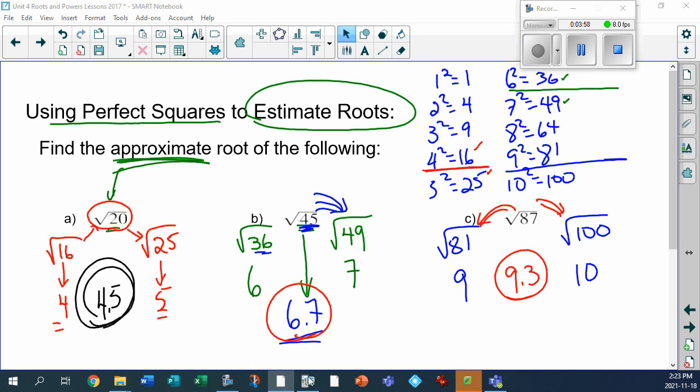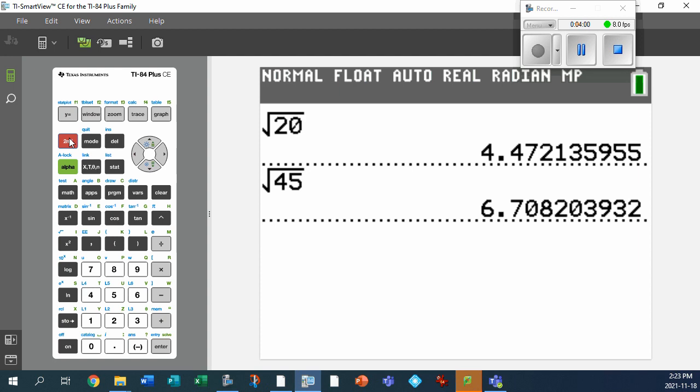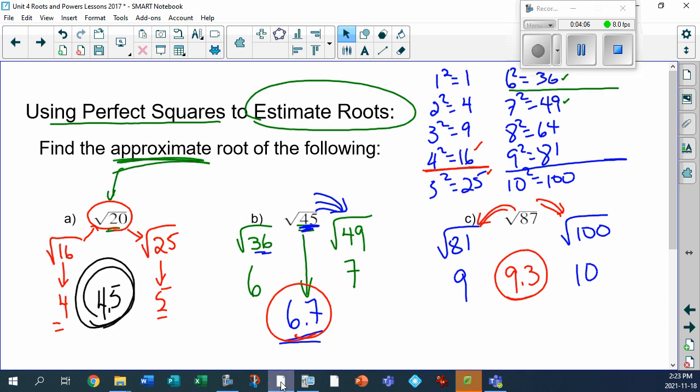Bring up the calculator. Square root of 87. And let's see. Oh, look at that. 9.3. Oh, my goodness. I have incredible luck today, I tell you. Look at that. That's beautiful.